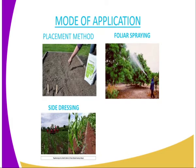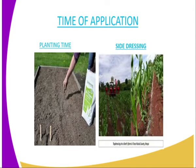Then we have foliar spraying — those are fertilizers which are sprayed when the plant establishes itself in the field. Then we have side dressing. For example, CAN — calcium ammonium nitrate — is applied after the crops establish themselves in the field to supply nutrients. It is applied after establishment because it is highly leached, so it would be leached before being utilized by the plant if applied at planting.